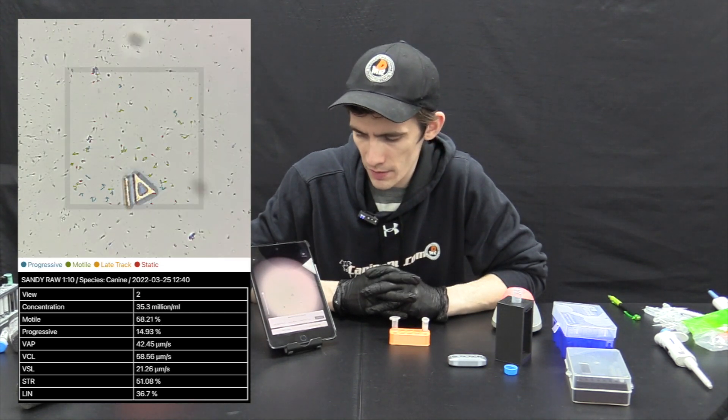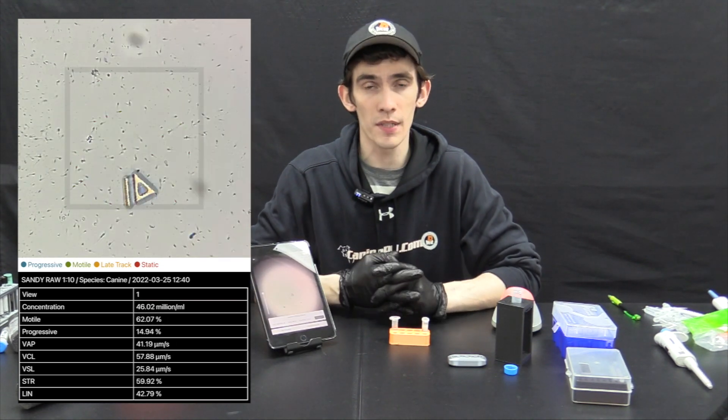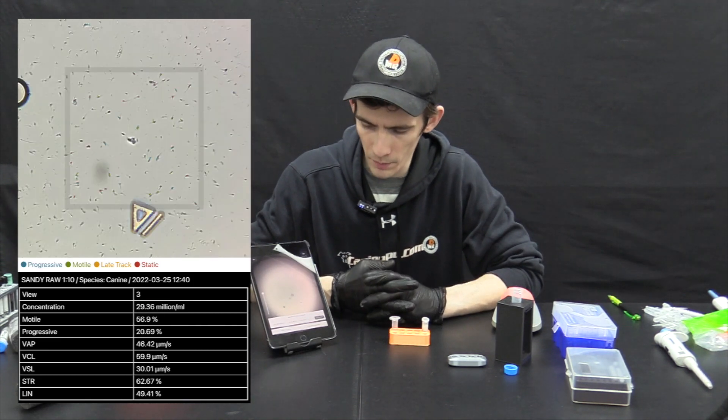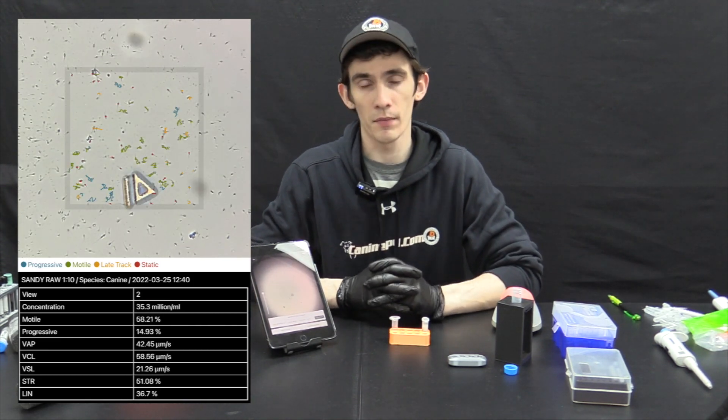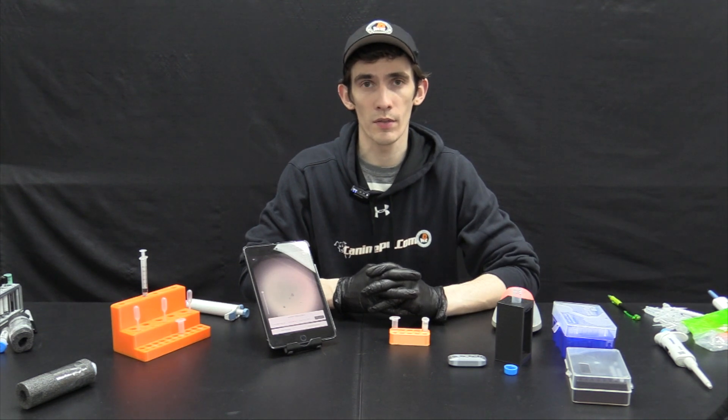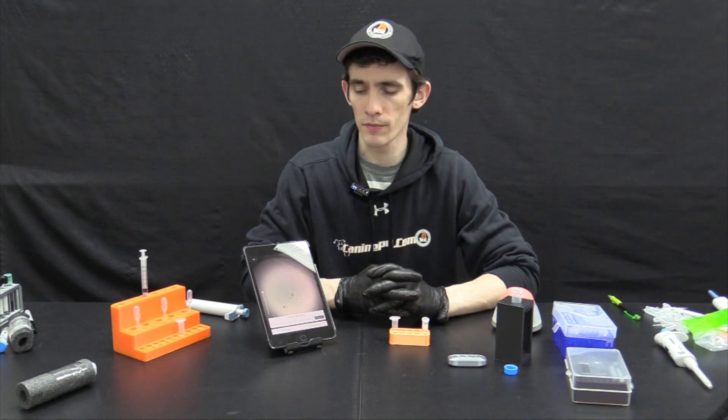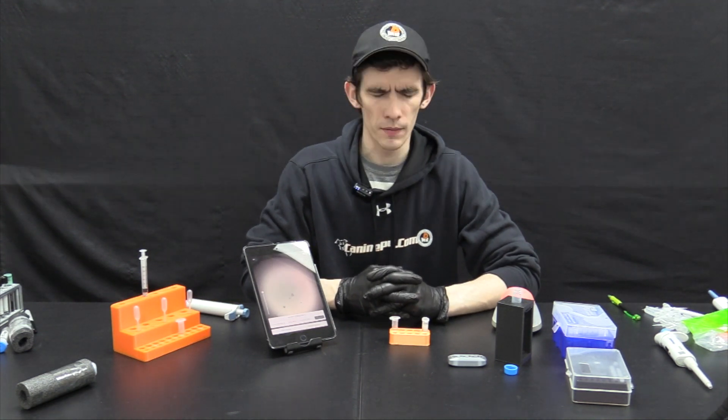But since we're in the 10 to 75 million per milliliter range we now finally have the progressive sperm count which for this sample is a measly 14%. Now this is a highly underperforming sample, however there are a variety of different things that can contribute to lack of good movement from the sperm cells and these items should be evaluated including age, temperature, mixing, type of extender used and so on and so forth.